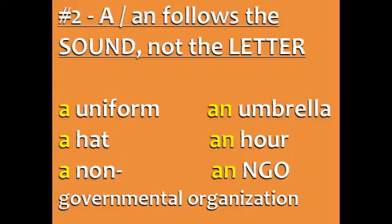Number two: whether you use a or an follows the sound, not the letter of the next word. For example, we say 'a uniform' because 'uniform' starts with a 'yuh' sound, but 'an umbrella' because 'umbrella' starts with an 'uh' sound — a vowel sound.